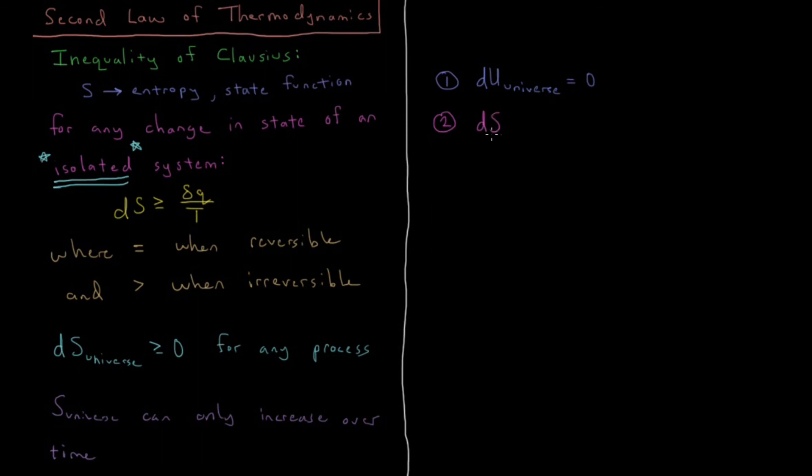For the second law, the change in entropy for the universe, or any isolated system, is greater than or equal to zero for any process which changes the state of the universe or whichever isolated system we are discussing.